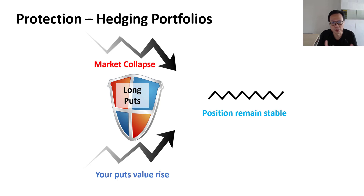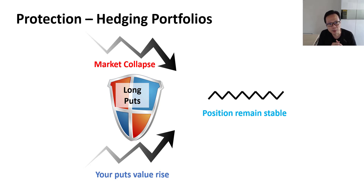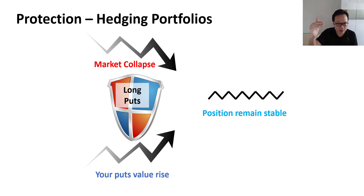The second use of options is for protection and hedging. Most people, including professionals, are long-only investors — they buy securities and hold them in a portfolio and don't directly short anything. In a bad market, they may want to hedge their portfolio against adverse price moves, and that is where they will start to purchase put options on the portfolio. If prices of the underlying fall, these options pay off and offset the losses from the portfolio.